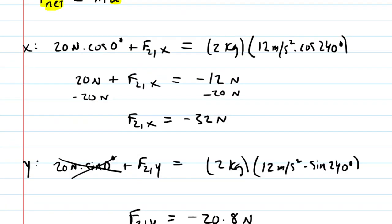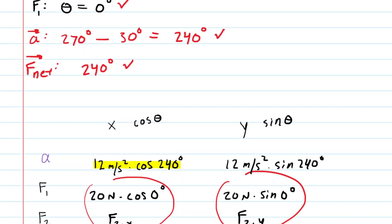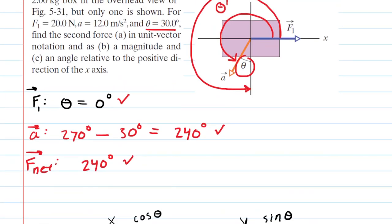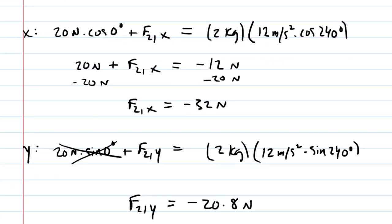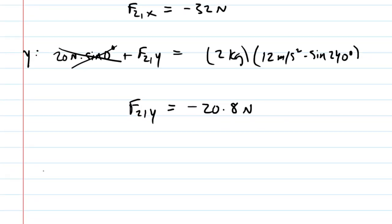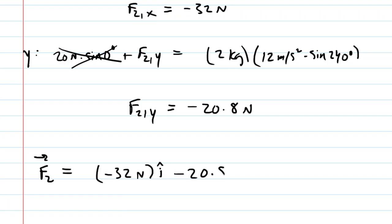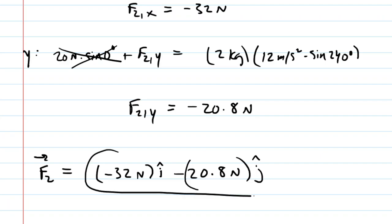For part a, the question asked for unit vector notation for F2. So F2 in unit vector notation is equal to negative 32 newtons î plus negative 20.8 newtons ĵ. This is the correct answer to part a.